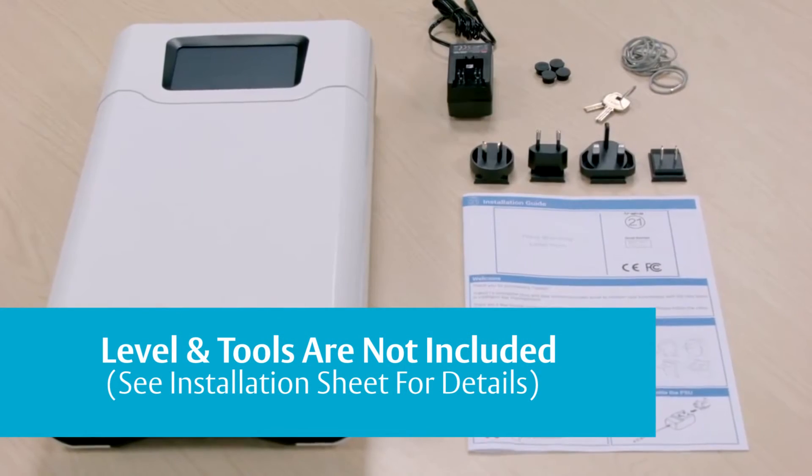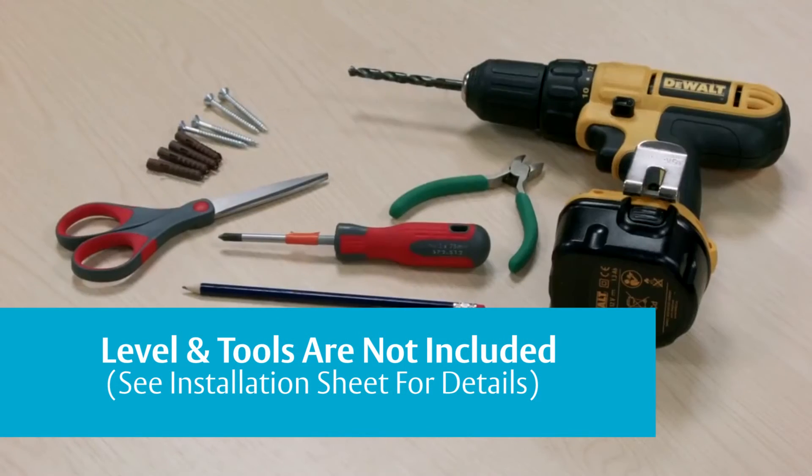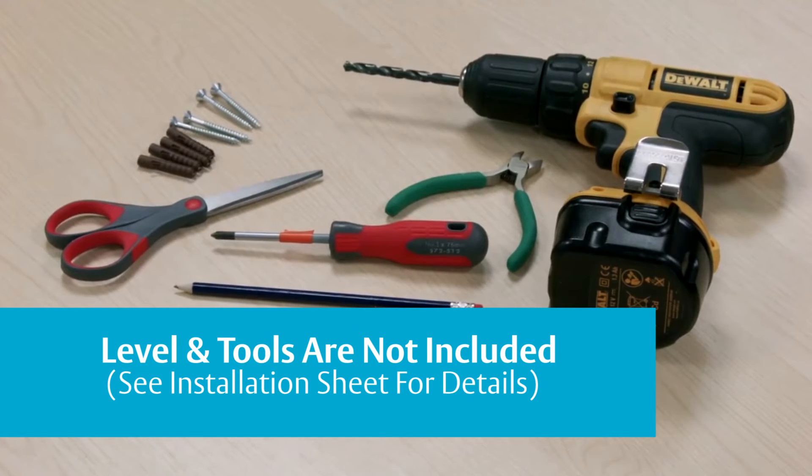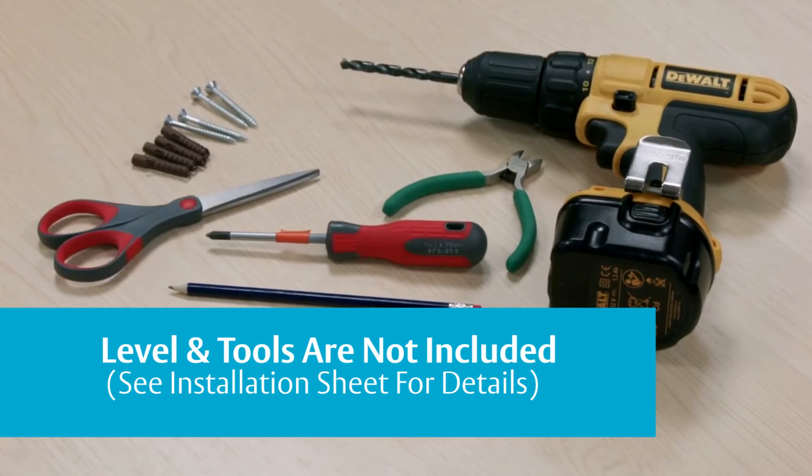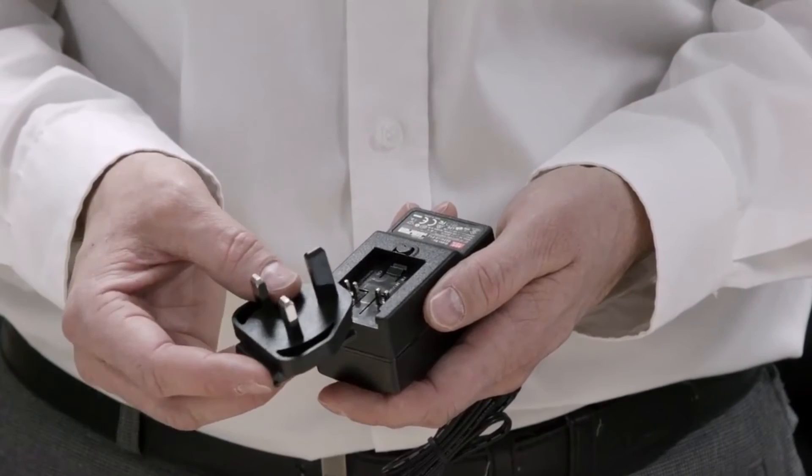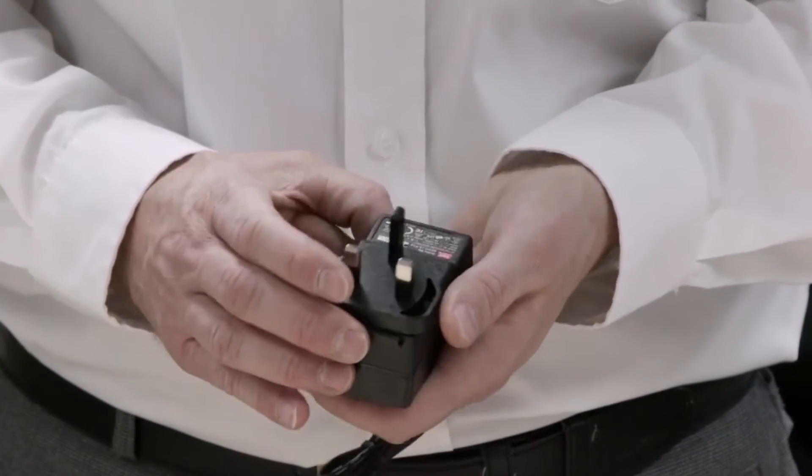First, you will need to attach the unit to the wall using all of the items supplied in the box. You will also need the following tools. To get you started, assemble the PSU by clipping on the appropriate adapter.